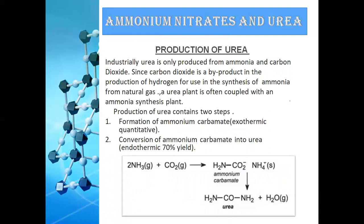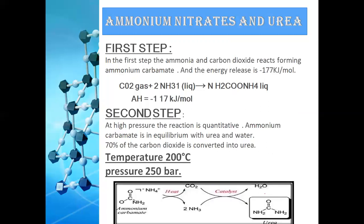Urea is produced from ammonia and carbon dioxide in a two-step process. The first step is the formation of ammonium carbamate, which is an exothermic and quantitative reaction releasing 177 kJ/mol. The second step is the conversion of ammonium carbamate to urea and water, which is endothermic. The temperature of the second step is 200 degrees Celsius and the pressure is 250 bar, yielding approximately 70% urea. Ammonium carbamate is in equilibrium with urea and water.